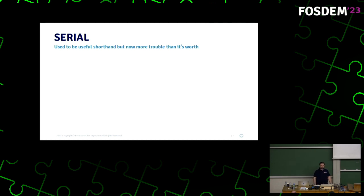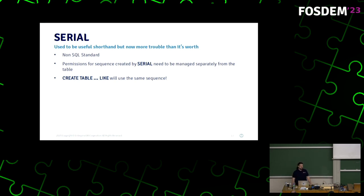Serial, how many people here use Serial and like it? Okay. So I will explain why you shouldn't like it. It used to be useful shorthand. And it is still useful shorthand. But it's now less useful than it used to be because it's non-SQL standard and it messes up the permissions when you use it. So permissions for sequences created using Serial, automatically created using the Serial keyword when creating a table, they need to be managed separately from the table. So a consequence of this disconnect is that createTable, like another table, with a table that uses Serial, will use the same sequence from the other table. And you don't want that, usually. So instead, we've come up with identity columns that are more verbose but much clearer in what they do because they're attached to the table that created them. So createTable, id, bigint, generated by default as identity and also primary key.